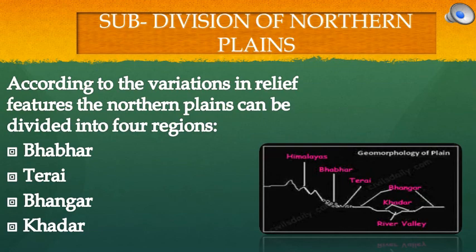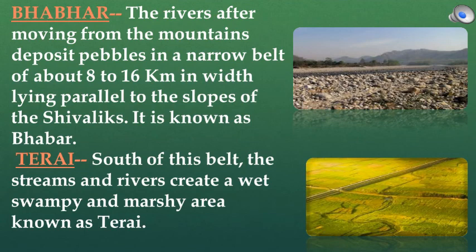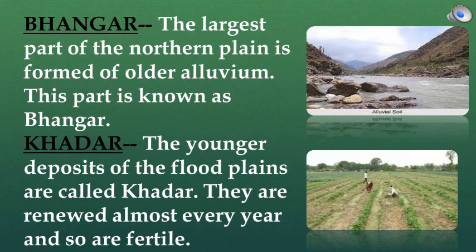According to the variations in relief features, the Northern Plains can be divided into four regions: Bhabar, Tarai, Bhangar and Khadar. The rivers, after moving from the mountains, deposit pebbles in a narrow belt of about 8 to 16 km in width lying parallel to the slopes of the Shivaliks — this is known as Bhabar. South of this belt, streams and rivers create a wet, swampy and marshy area known as Tarai. The largest part of the Northern Plains is formed of older alluvium, known as Bhangar. The younger deposits of the flood plains are called Khadar; they are renewed almost every year and so are fertile.